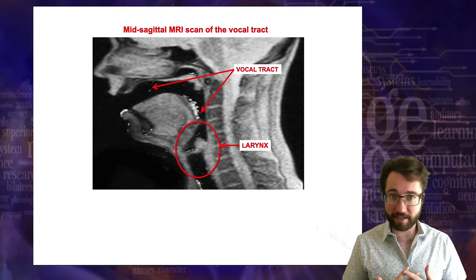The first row of sounds — p, b, t, d, k, g — are what we call stop consonants, also called plosive consonants. A stop consonant works by moving the articulator to its position to create a total blockage of airflow. Say 'ata' very slowly: first you say 'a,' then the tip of your tongue moves up to your alveolar ridge and creates a stoppage. You get a buildup of air behind your tongue, then you release it suddenly — 'ata.' A stop consonant means you completely block the airflow, let air build up, then release it.